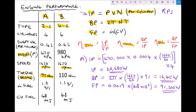Now we have our indicated power, brake power, and fuel power for our two stroke engine, so we can calculate our efficiencies. The indicated thermal efficiency is our indicated power divided by our fuel power: 20,680 divided by 91,200 gives an indicated thermal efficiency of 0.227, or 22.7%.